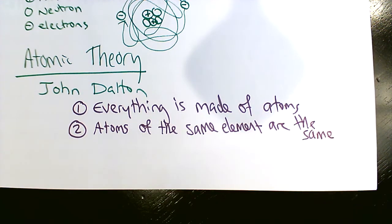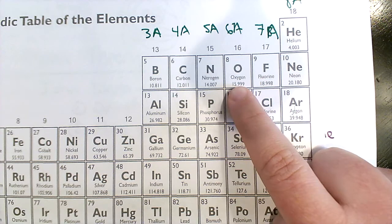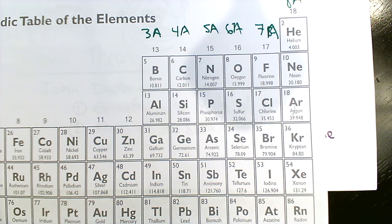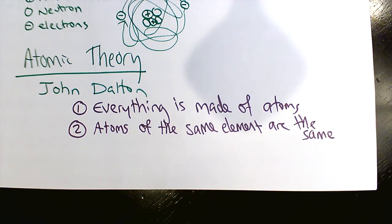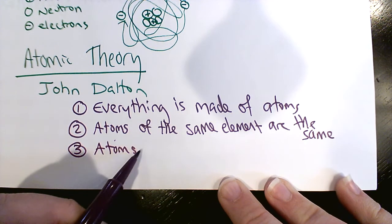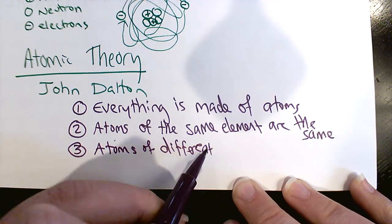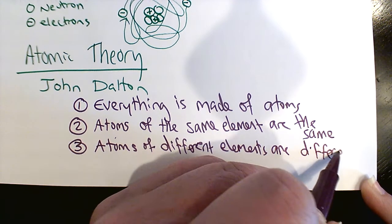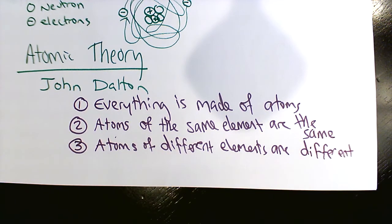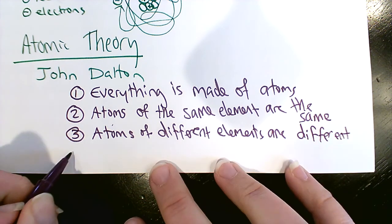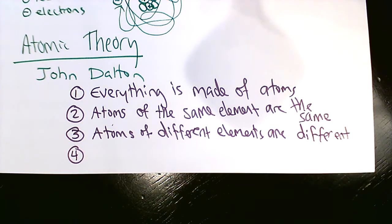Second key idea: atoms of the same element are the same - if I have two atoms of oxygen, they are the same. Third idea: atoms of different elements are different. There is something essentially different between an atom of carbon and an atom of oxygen, or an atom of arsenic and an atom of bromine. These ideas seem simple to us but were revolutionary at the time.